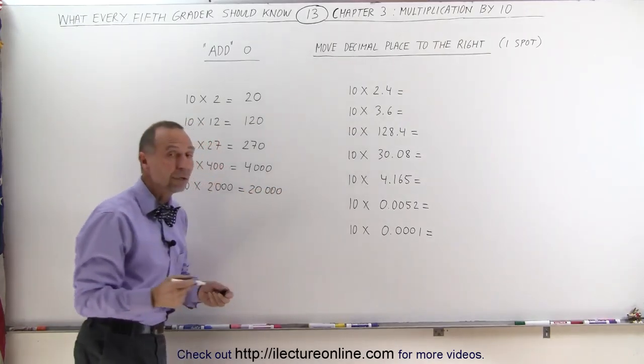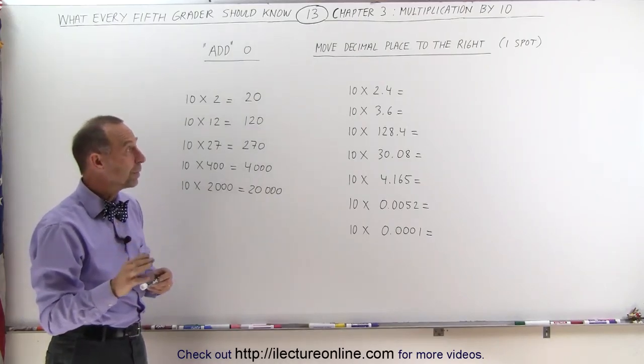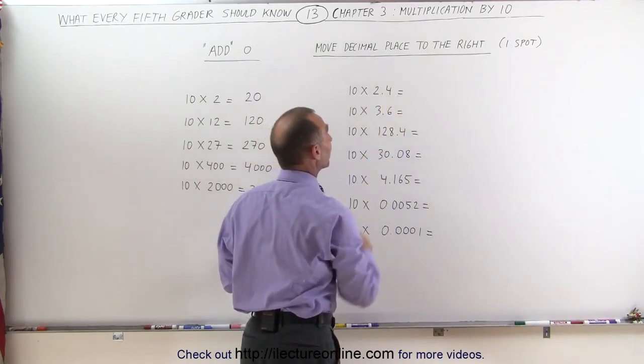So all you have to do when you multiply times 10 is simply add a zero to the number. Or, if the number has a decimal place like this, then you move the decimal place over one spot.